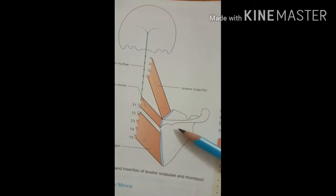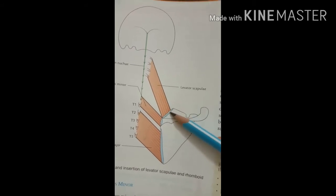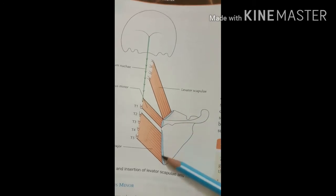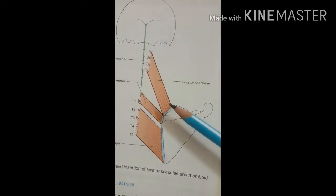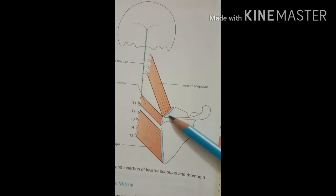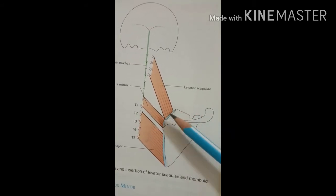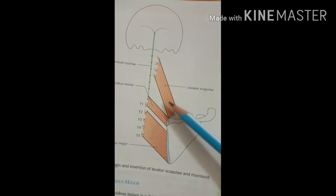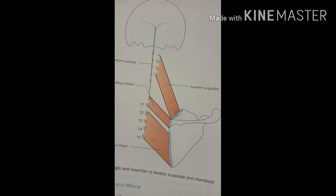The levator scapulae originates from the transverse processes of C1 and C2, and the posterior tubercle of the transverse processes of C3 and C4. The muscle goes downwards and laterally and is inserted into the superior angle and the upper part of the medial border of the scapula. The nerve supply is the dorsal scapular nerve. The actions are elevation of the scapula and steadying the scapula during movement of the arm.